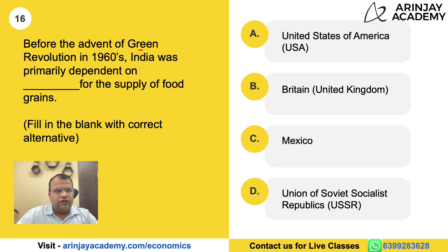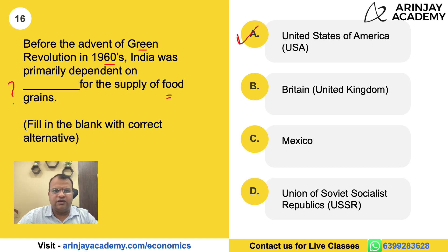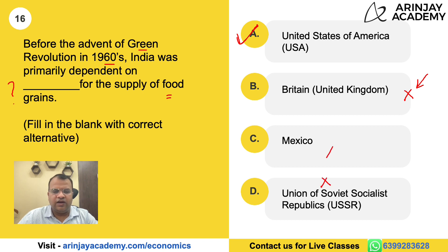Question 16: Before the advent of the Green Revolution in the 1960s, India was primarily dependent on which country for the supply of food grains? The correct answer is the United States of America. Britain is not the right answer because they had just left India and were not interested in supplying food grains — on the contrary, they wanted India to remain an agricultural economy. USSR and Mexico are also not correct. USA is the correct answer.